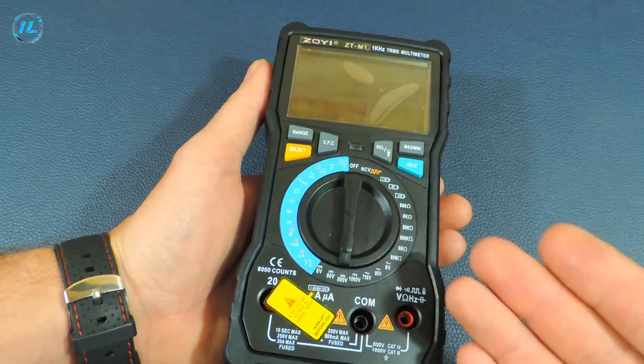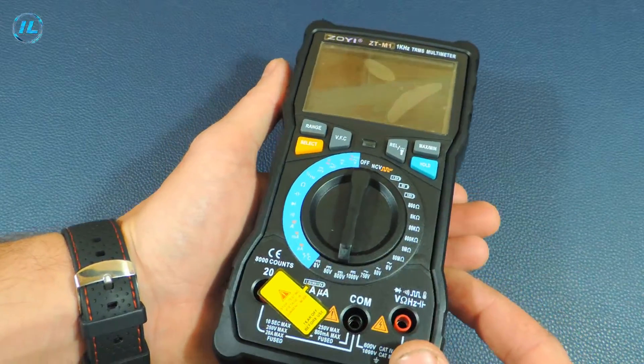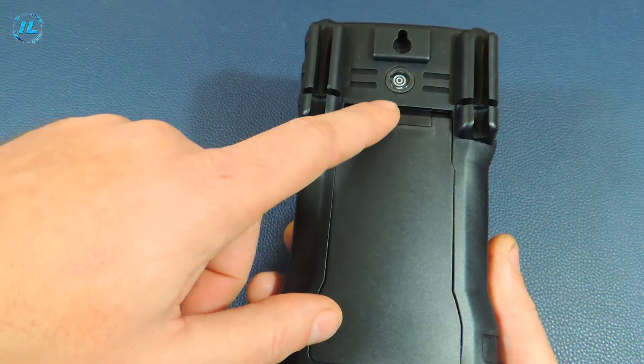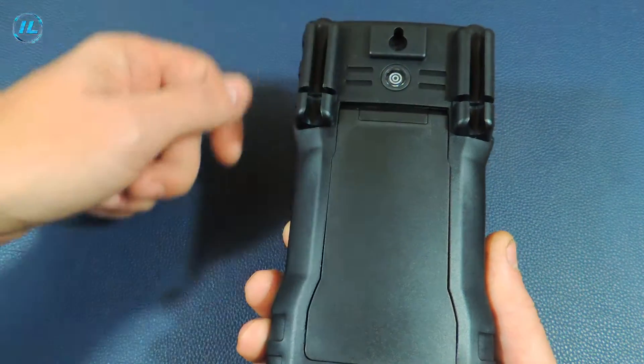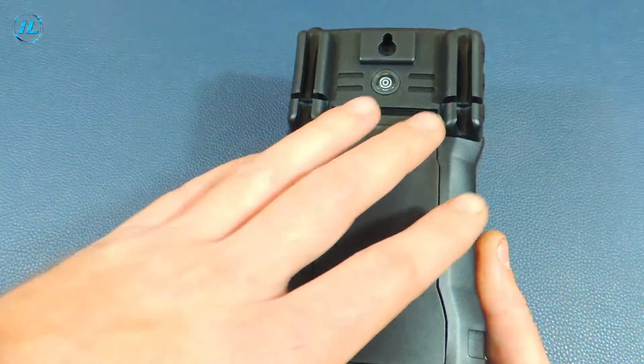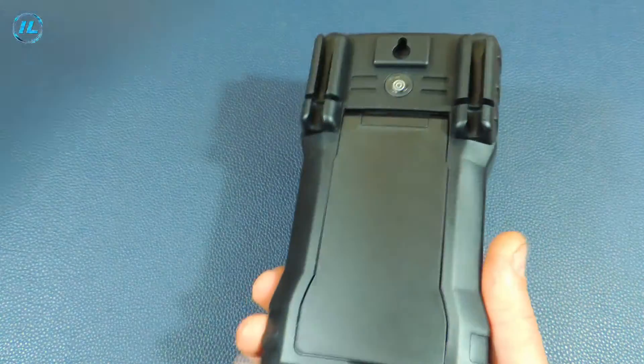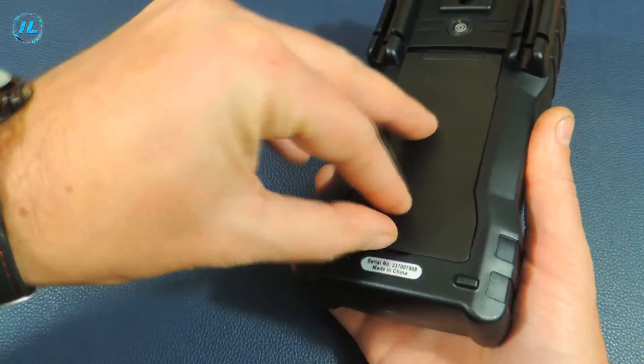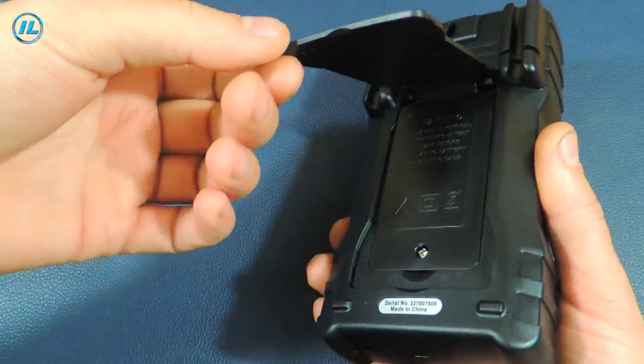And here is the multimeter itself. It has a fairly large size and looks good. As for its appearance, I really like it. On the back side there is a flashlight, a hole for mounting the multimeter on the wall and a mount for probes.